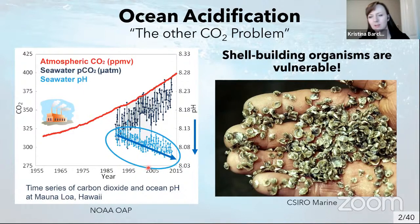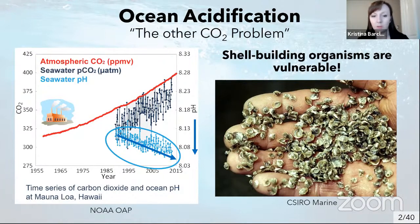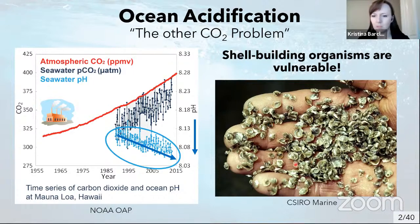The other thing is that hydrogen ions bond readily with carbonate ions that are naturally found in seawater. This is really important for shell-building organisms. There's a lot of concern about how vulnerable shell-building organisms will be, because those carbonate ions are building blocks — if they're taken away, it makes shell formation potentially more difficult. There's a lot of concern, particularly in Canada, around these potentially vulnerable socioeconomic species.